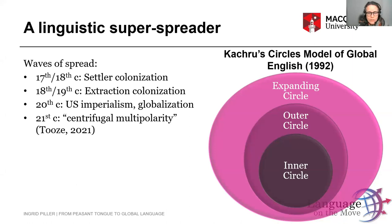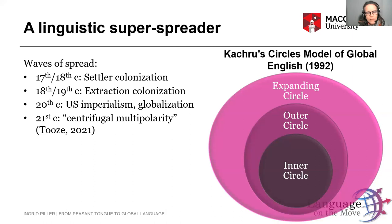Finally, with the end of colonialism in the 20th century, English didn't go away, although those places that were previously colonies of Britain — and to a small extent the Philippines as a colony of the US — became independent states. But that didn't actually stop the spread of English, because by then, US imperialism, globalization, and the soft power of Hollywood meant that all those countries that had not been colonies of Britain also wanted to learn English. And so English became an important language taught in education systems across the globe.